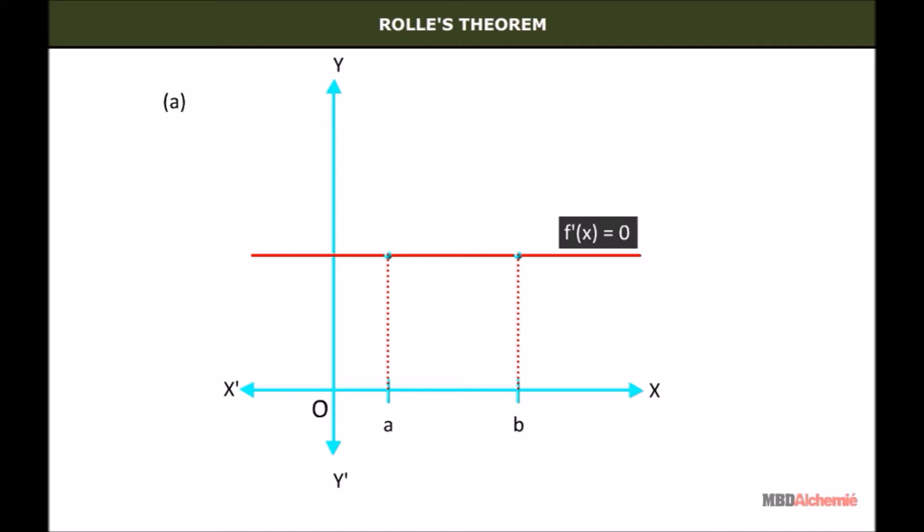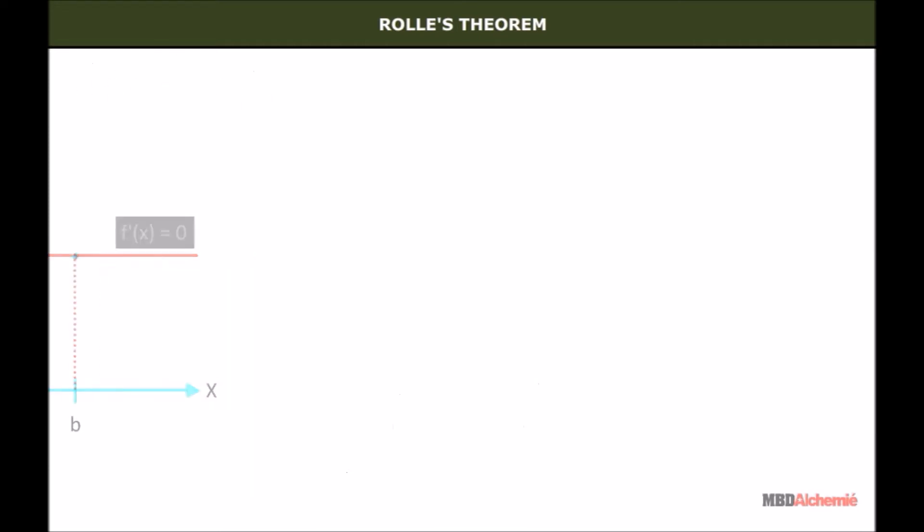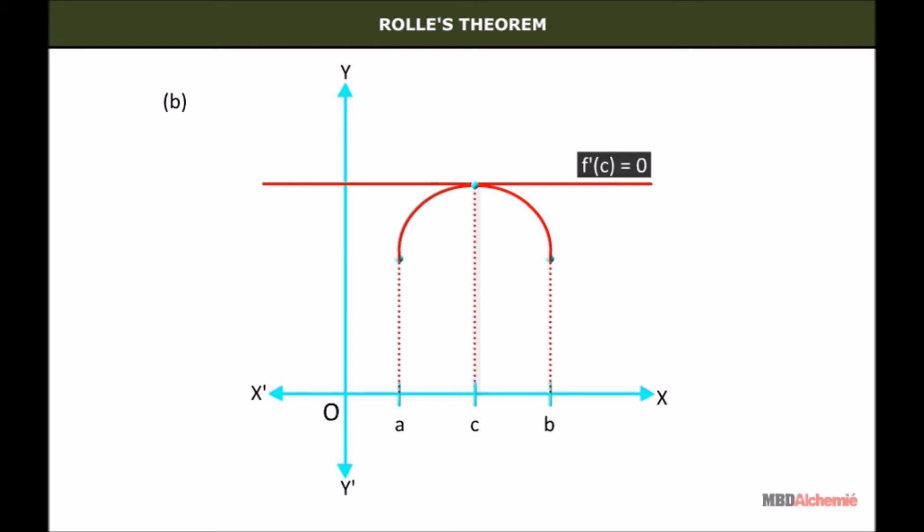Then f'(x) = 0, which is true. In this graph, let the x-coordinates of the points be a and b. f(a) = f(b). As we can see, at this point,